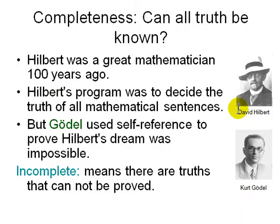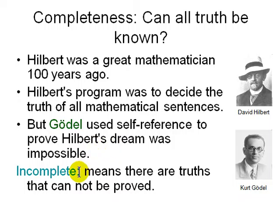Around that time, Leibniz had also proposed that all truth could be known. Then there's another German-Austrian, Kurt Gödel, who came to the US in the 1940s. He actually proved, using math itself, that Hilbert's dream was impossible — that mathematics is incomplete. Incomplete means there are truths that cannot be proved. And this is not just a statement about math; it's a proven statement about math.